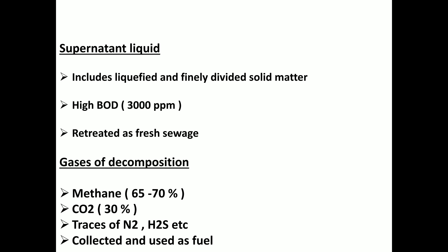The second product is Supernatant Liquid. This is the liquid that separates from the solid matter during digestion. It is rich in dissolved substances. The BOD value of supernatant liquid is very high — about 1,500 to 3,000 ppm. Because of this high BOD level, we must treat it and return it to the sewage treatment plant.